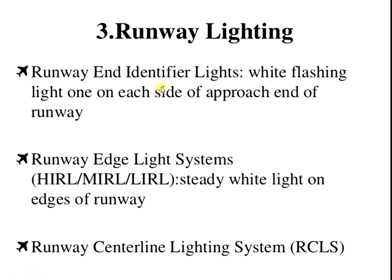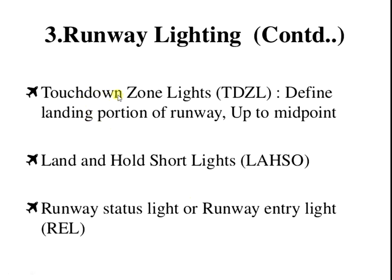The runway end identifier lights are white flashing lights, one on each side of the approach end of the runway. The runway edge light system — high-intensity (HIRL), medium-intensity (MIRL), or low-intensity (LIRL) — uses steady white lights on the edges of the runway. The runway center line lighting system, or RCLS, is also provided with white light. The touchdown zone lights (TDZL) define the landing portion of the runway up to the midpoint.